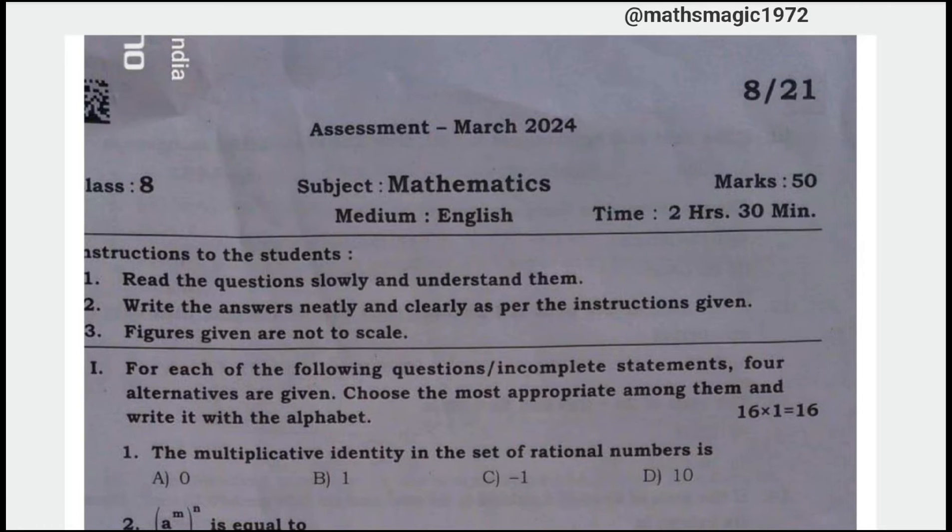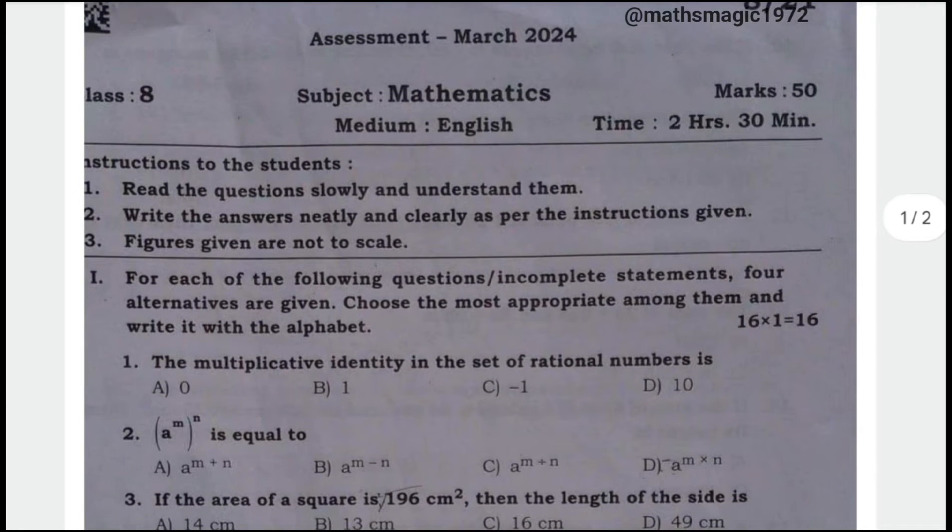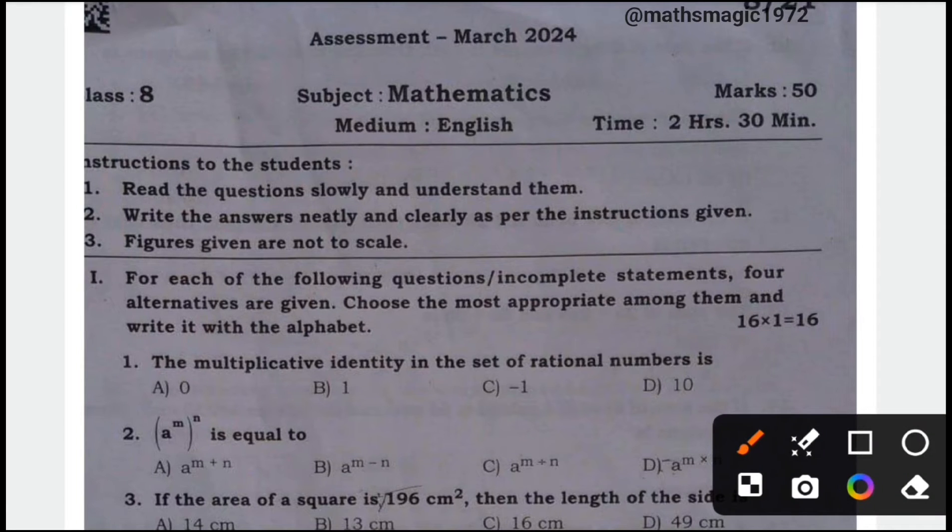First question, the multiplicative identity in the set of rational numbers is 0, 1, minus 1, 10. The correct answer is option B, 1 is the multiplicative identity.